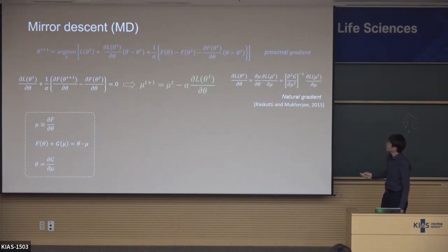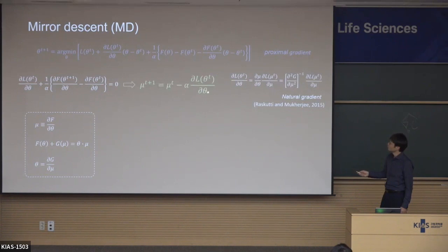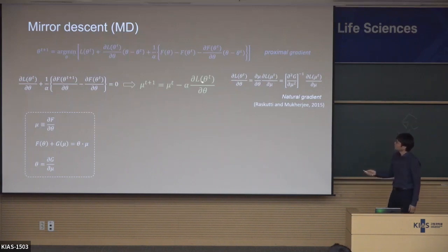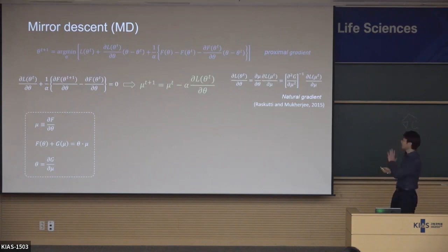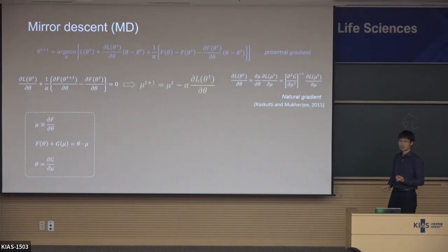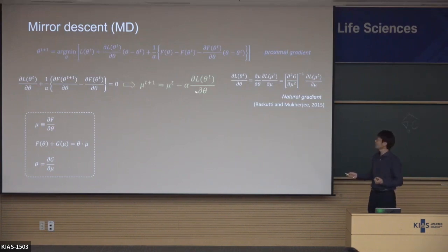Using this new variable mu, I can change this equation: this derivative is mu_{t+1} and this one is mu_t. Rearranging gives this equation. This looks like a gradient descent, but it's not gradient descent — this is an update of mu, but the gradient is not with respect to mu, but with respect to theta. Applying chain rules, and plugging in theta, in terms of mu this gradient is actually the natural gradient considering the curvature. That's the essence of mirror descent: they are updating using gradient descent, but implicitly they are applying natural gradient.